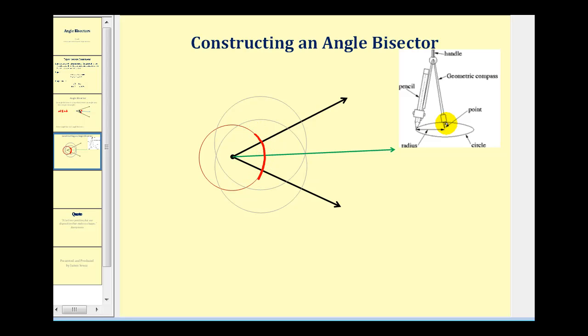And now taking the compass, we're going to put the point at the intersection of this arc and one of the rays, and either construct another circle or swing another arc that would pass through where you think the angle bisector would be. So we'd have to swing an arc that would be at least from here to here or something similar to that. And then we'd take the point of the compass and put it on the intersection of this red arc and the other ray, and do the same thing, swing an arc that passes through where we think the angle bisector would be. And that would look something like this.